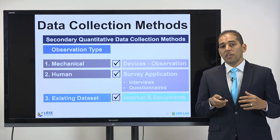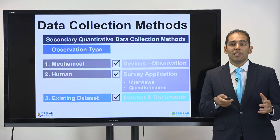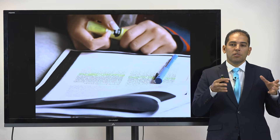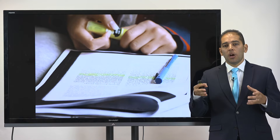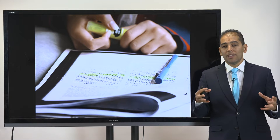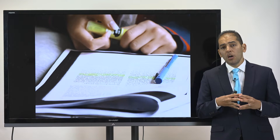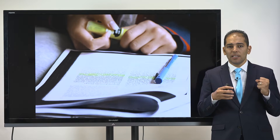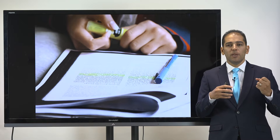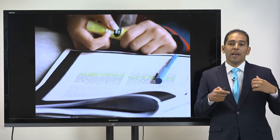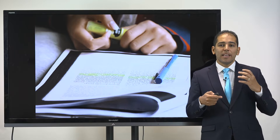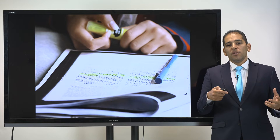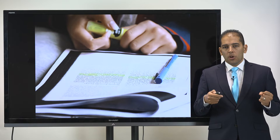A third way is to use existing data sets, where we refer to published repositories, online repositories, articles, or reports and extract information from tables or publications, thereby relying on secondary resource data — done by investigating or visiting public repositories online.